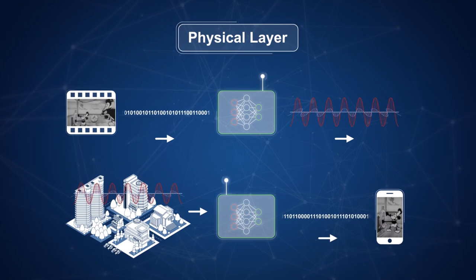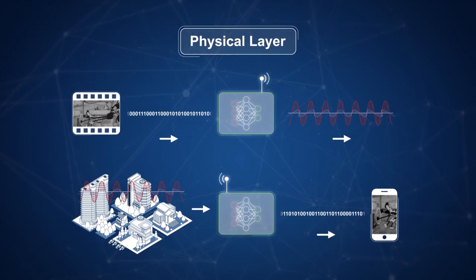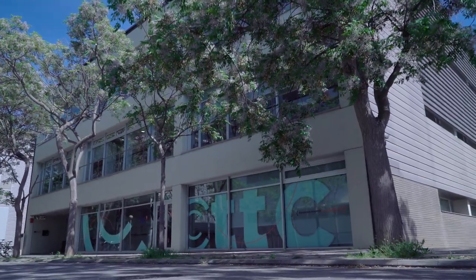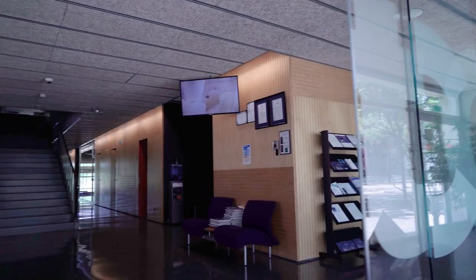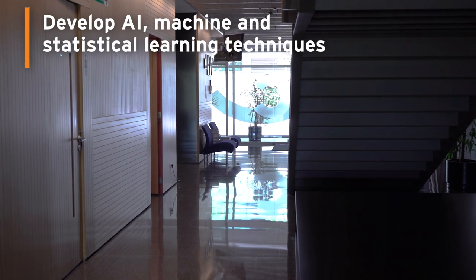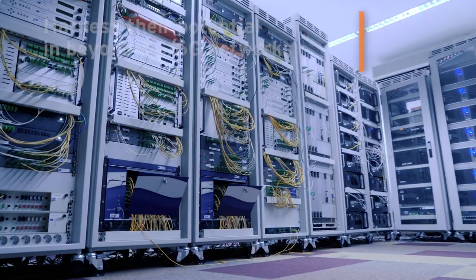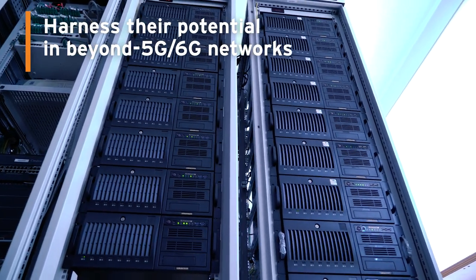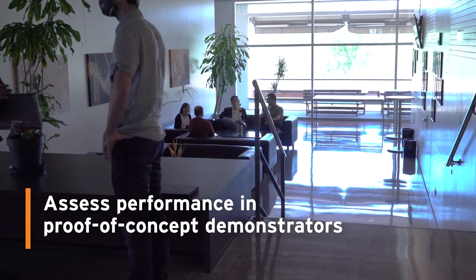Today AI methods have reached maturity and can assist these processing steps to boost performance, robustness, and the reliability of the physical layer. In the Aristides project, we at CTTC investigate how to further develop AI, machine, and statistical learning techniques, as well as how to harness their potential for the design of beyond 5G and 6G networks. We also assess their performance in proof-of-concept demonstrators.